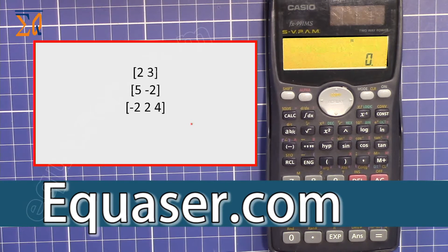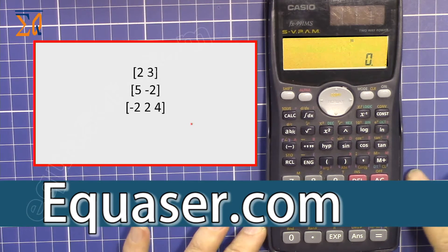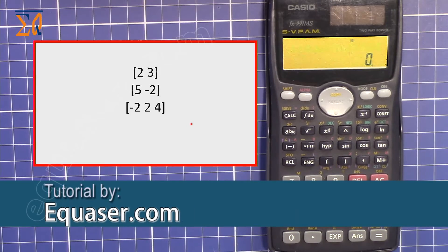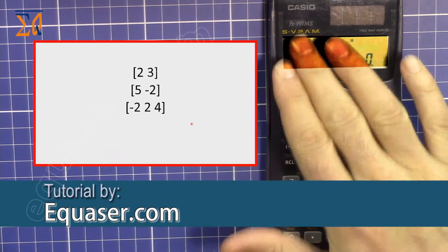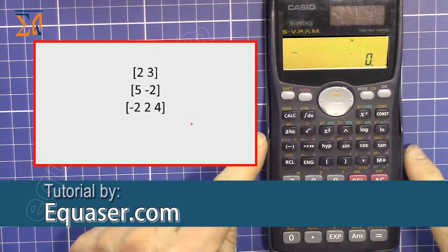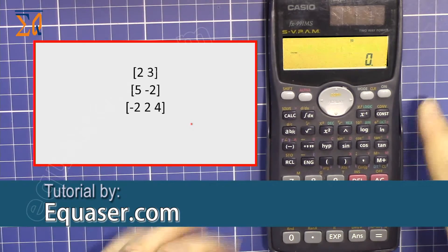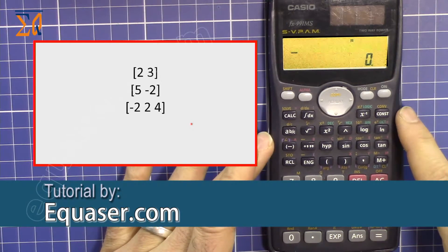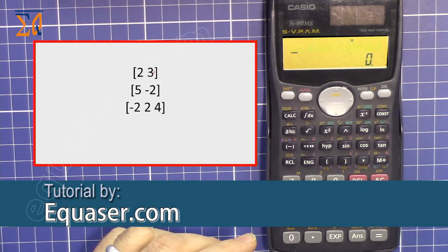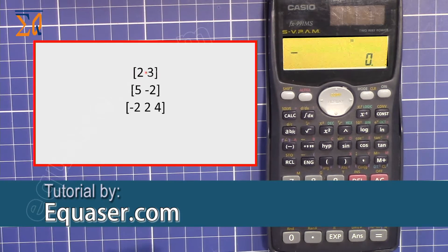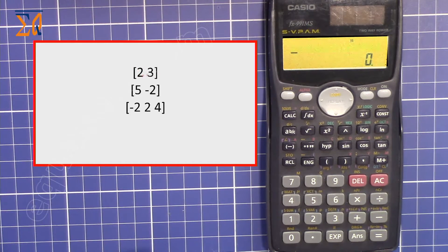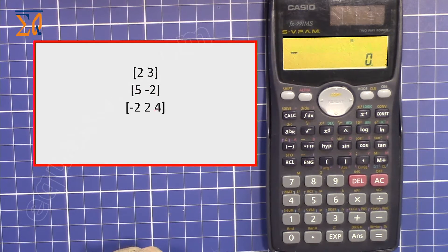Hi, welcome to another video from Equazor.com. In this video I'm going to show you how you can do vector calculation using the Casio FX991MS. We have a vector of two dimensions: the first value is [2, 3], the second is [5, -2], and the third one is [-2, 2, 4] which is three-dimensional.